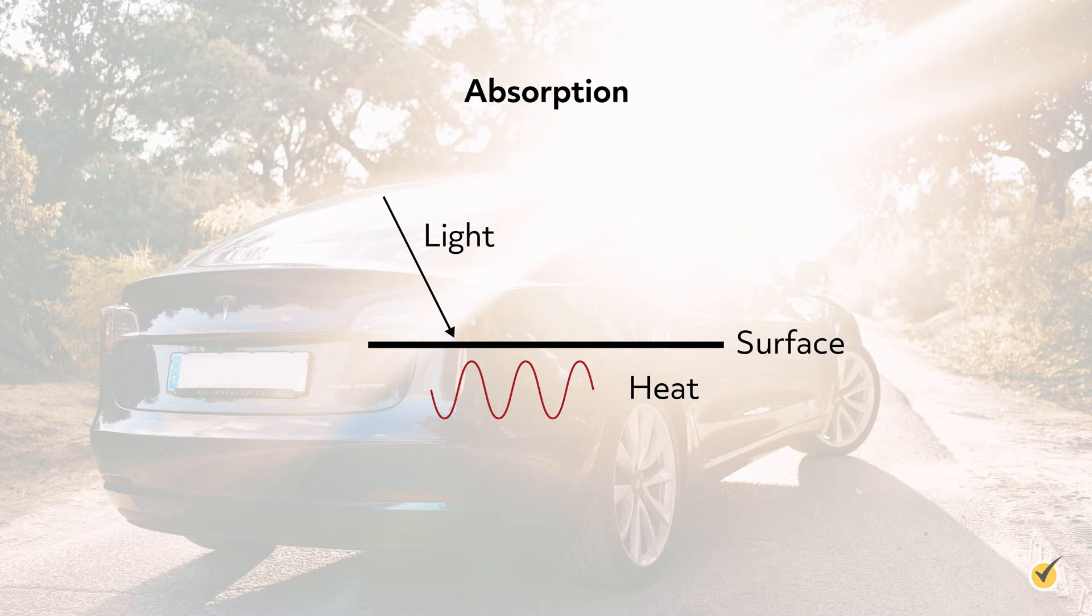Materials will absorb only certain frequencies of light and transmit or reflect others. It all depends on the atoms in the material and the way they interact with that frequency of light.